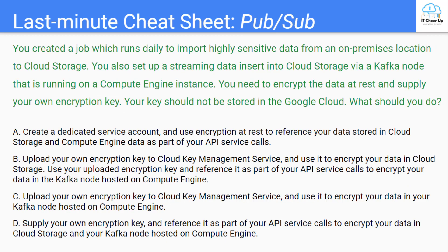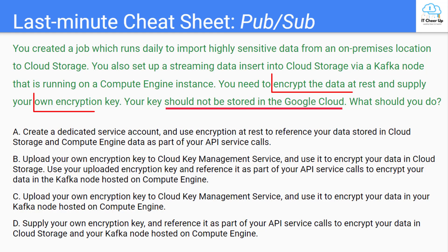How about this one? Pause the video and try to answer it yourself. This question requires client-side encryption prior to sending data to Cloud Storage. Two components need to be considered in this encryption at rest: Cloud Storage and Kafka load. You need to supply your own encryption key as part of the API service calls to these two components. The correct answer is D.